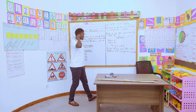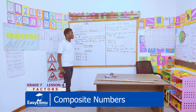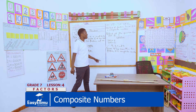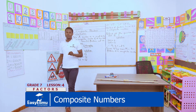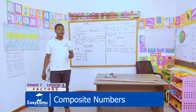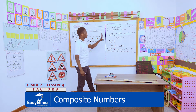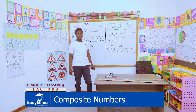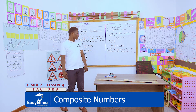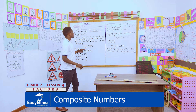So long as the number of factors or divisors of a particular number exceeds 2, then that number is a composite number. But if we only have 2 divisors, then that is a prime number. Are we communicating? Good.